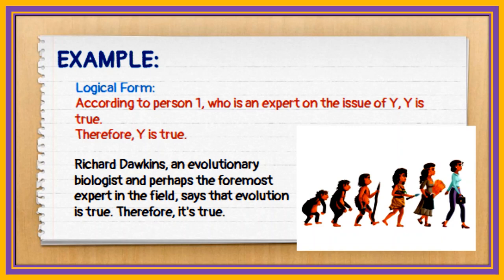For example, Richard Dawkins, an evolutionary biologist and perhaps the foremost expert in the field, says that evolution is true — therefore it is true, regardless of the absence of strong evidence.